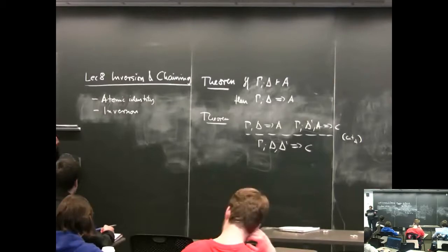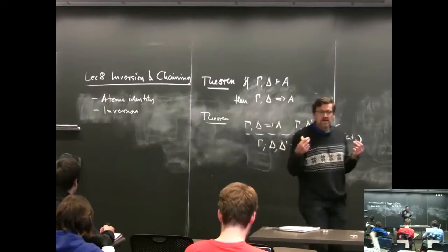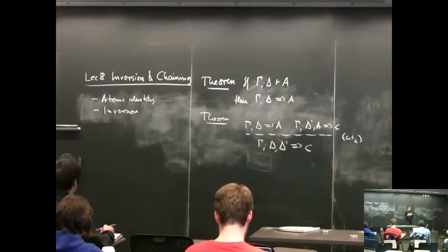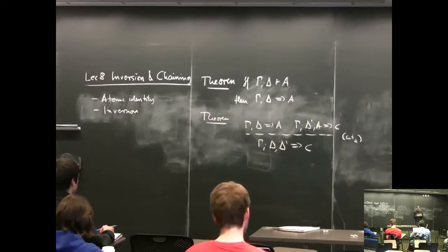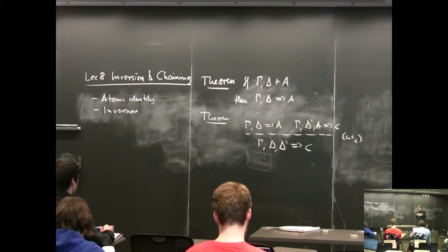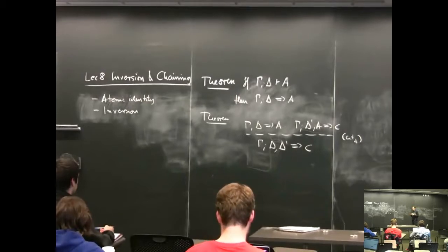The other property we checked was identity expansion, which is a local property. We show how to prove, for example, identity at type A implies B and reduce it to identities at type A and type B. The global version of identity expansion would be the ability to take identity only at atomic types — as Christina was indicating, we can't quite eliminate identity entirely.